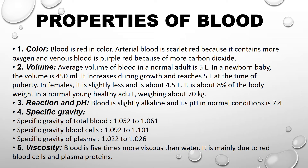Reaction and pH: Blood is slightly alkaline, with a pH of 7.4. Specific gravity of blood is approximately 1.050–1.061; for total blood cells it is 1.092–1.101; and for plasma it is 1.022–1.026. Blood viscosity is 5.24, mainly due to red blood cells and plasma proteins.